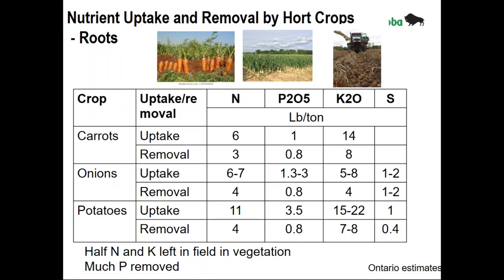Looking at root crops — carrots, onions, and potatoes — uptake includes both above-ground and harvested in-soil portions. About half the nitrogen and potassium taken up by the crop are left in the field with the vegetation after harvest. A good portion of phosphorus is removed, particularly with carrots and onions, meaning much of the phosphorus applied will actually be harvested through those operations.